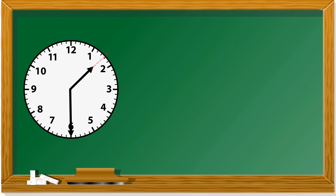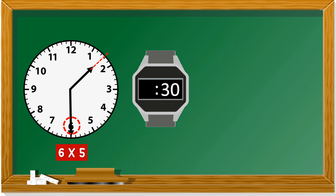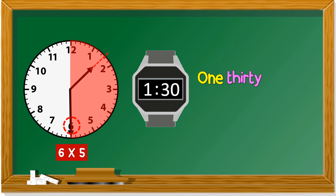Let's look at another example. The hour hand shows between 1 and 2 — not yet 2 o'clock, so it's 1. The minute hand is at 6, so we get 6 times 5, which is 30. The time is 1:30. Remember, 30 is 'half past,' so it's 'half past 1.'